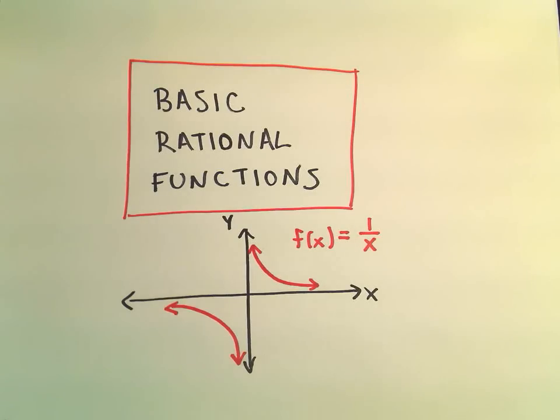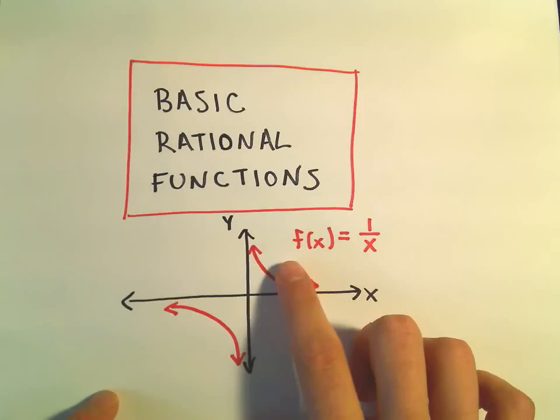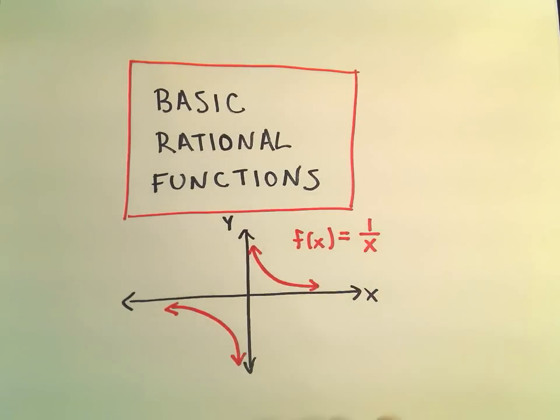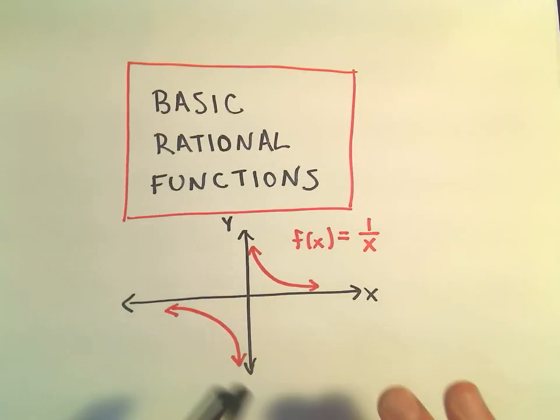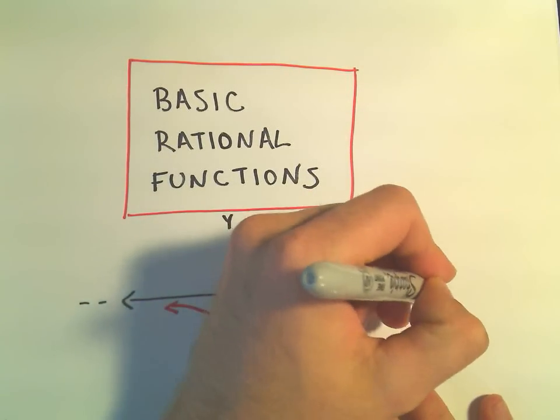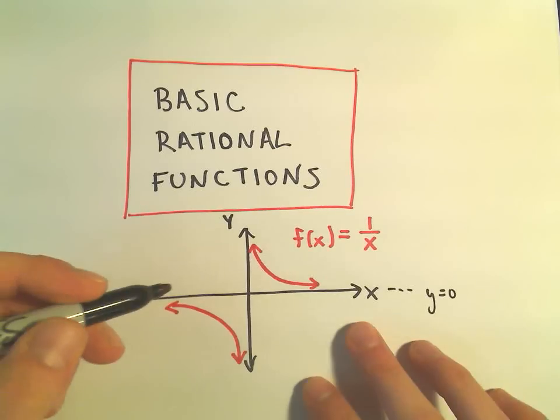Alright, in this video I'm going to graph a basic rational function, and the idea is the graph of 1 over x is the graph here in the red, and it's got a horizontal asymptote of y equals 0, or equivalently the x-axis.